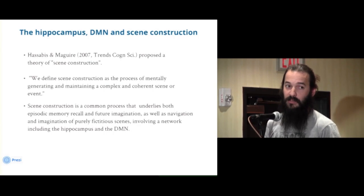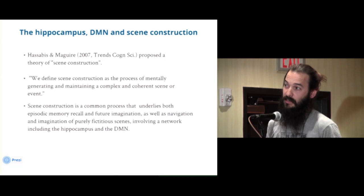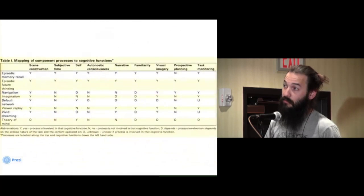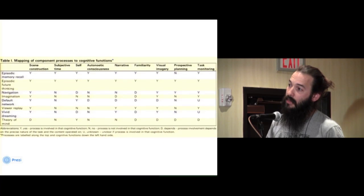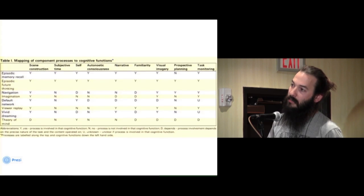What they argue is that scene construction is a common process underlying a variety of different mental states: episodic memory recall, future imagination of events, navigation, and imagination of totally fictitious scenes. It involves a network including both the hippocampus and the default mode. This table from their paper lists cognitive processes along the top — scene construction, subjective time, self, auto-noetic consciousness, narrative, familiarity, visual imagery, planning, task monitoring — and cognitive states down the side: episodic memory recall, episodic future thinking, navigation, imagination, default network activity, replay, vivid dreaming, and theory of mind. Scene construction is proposed to be involved in almost all of them.